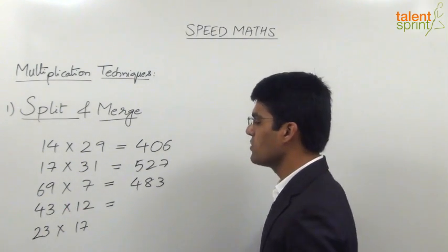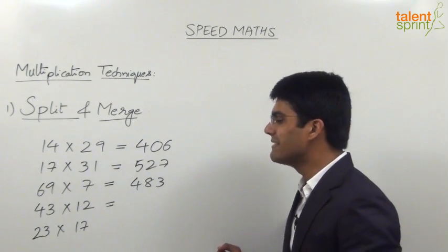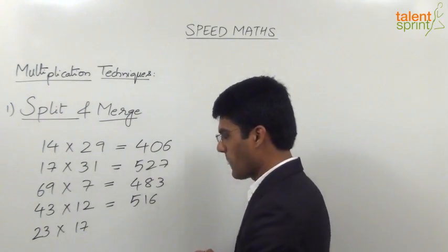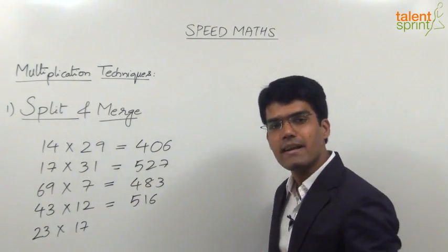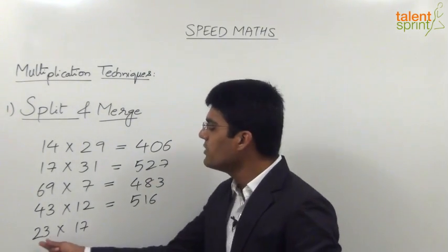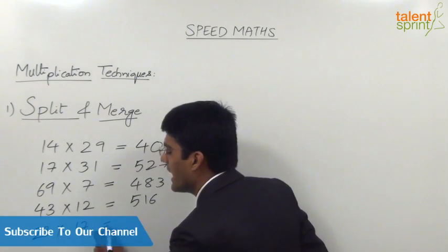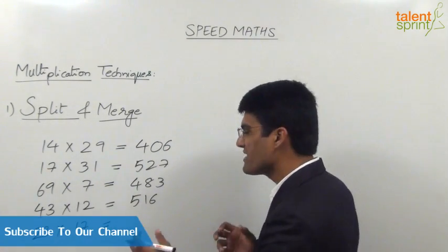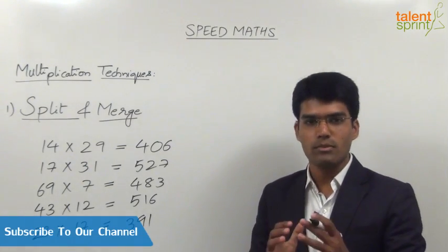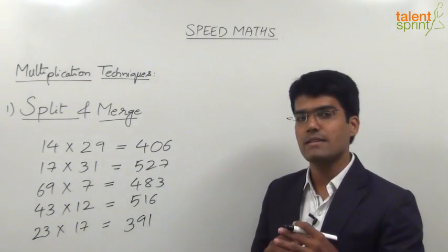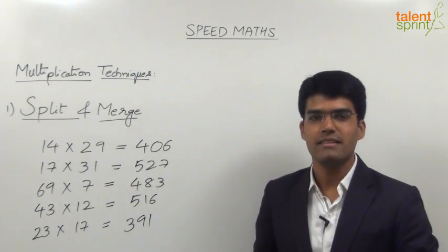The fourth is 43 into 12: 12 is 10 plus 2, so 43 into 10 plus 43 into 2 gives 430 plus 86 equals 516. The last is 23 into 17: take 23 twenty times to get 460, then return it 3 times — 23 into 3 is 69 — so 460 minus 69 equals 391. These are the answers for all five questions. Practice well and make sure you can do such calculations quickly without writing anything on paper.